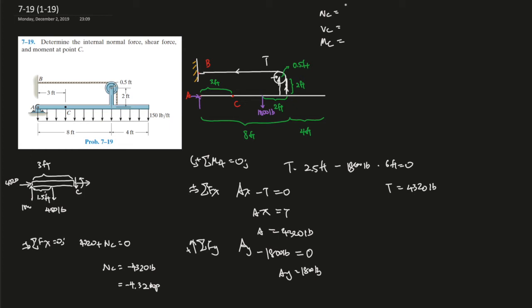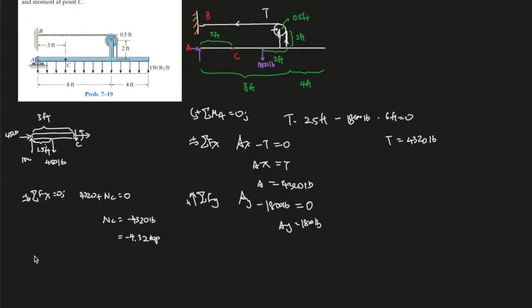So let's write it over here, negative 4.32 kip. And then we can use the sum of the forces in the y direction equals to 0, going up is the positive, therefore, so this is 1,800 pounds going up, minus the 450 pounds going over here, that should give us the shear force Vc, so shear force should be 1,350 pounds.